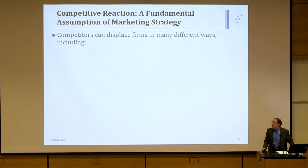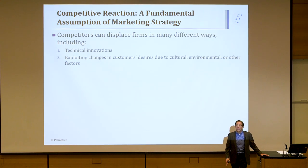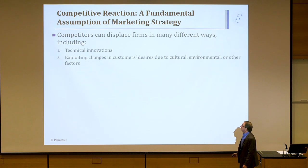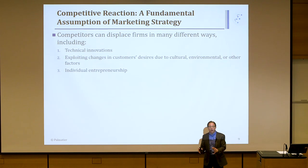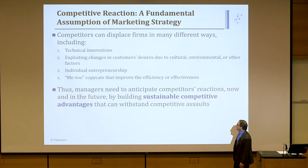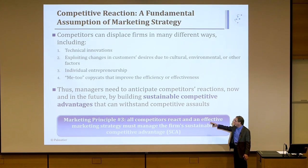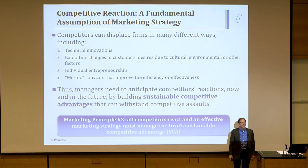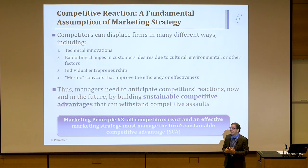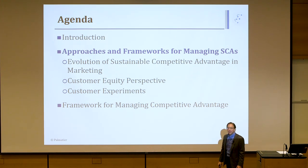Our premise is that competitive reaction — that competitors react — is a fundamental assumption of marketing strategy. Competitors can displace firms in many different ways. They can come out with a new technical innovation. They can exploit changes in customers' desires due to culture or environment. Individual entrepreneurship — how many new tech businesses have been started in garages and expanded to become multi-billion dollar businesses? Or a me-too copycat who just takes your idea and manufactures it in a cheaper location. Thus, managers need to anticipate these actions and build sustainable competitive advantage. Market Principle 3 is that all competitors react, and effective marketing strategies must manage sustainable competitive advantage.